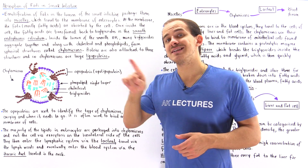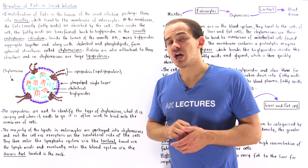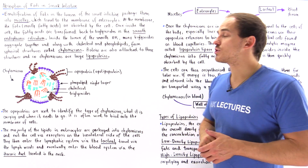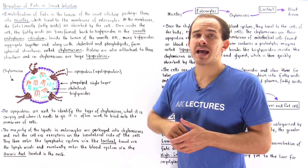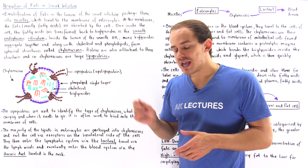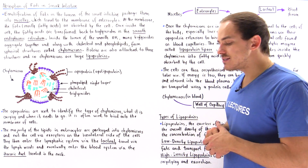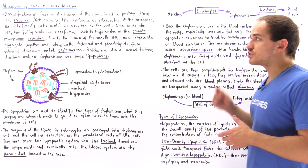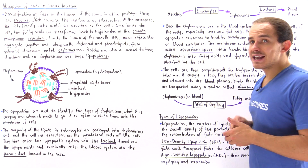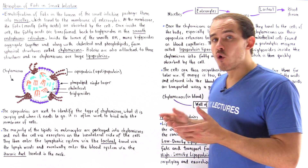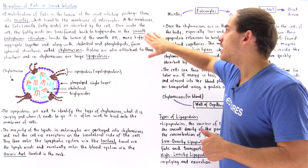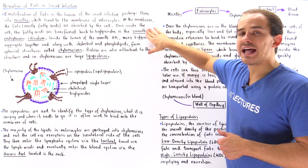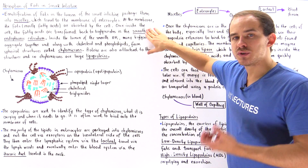Micelles fuse with the membrane and bring the fatty acids into the enterocytes, and once inside the cells, these fatty acids form triglycerides in the smooth endoplasmic reticulum.